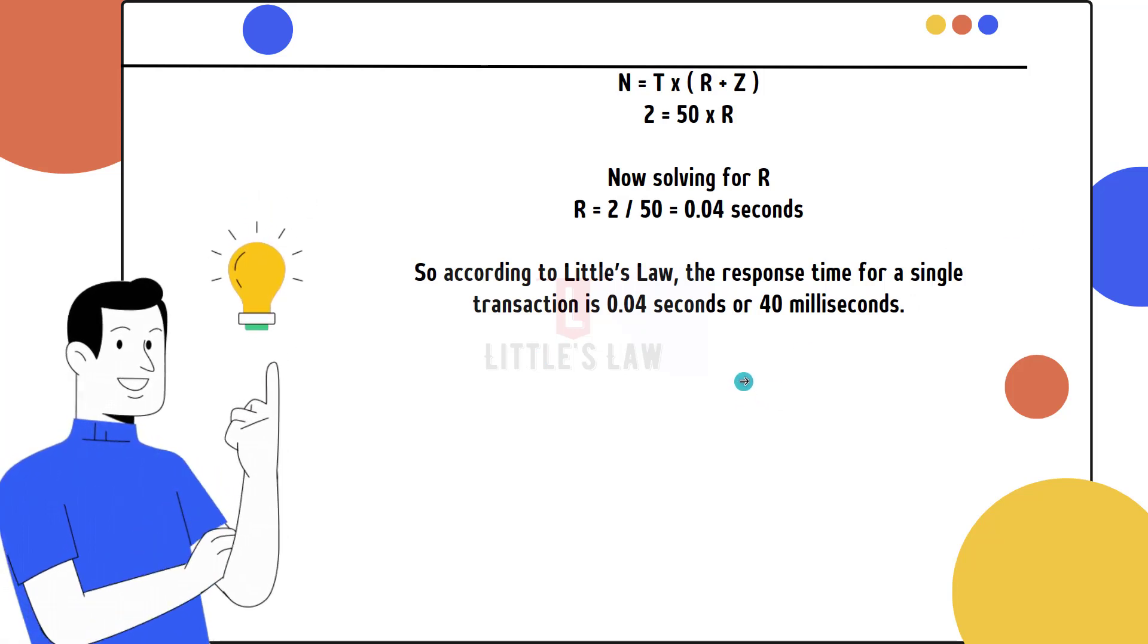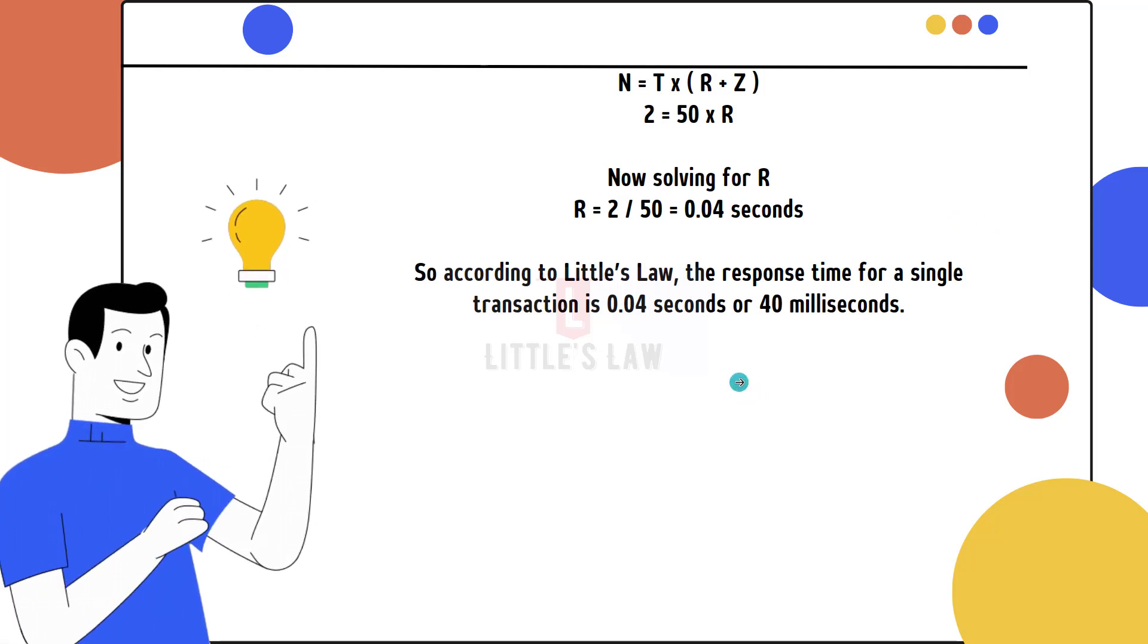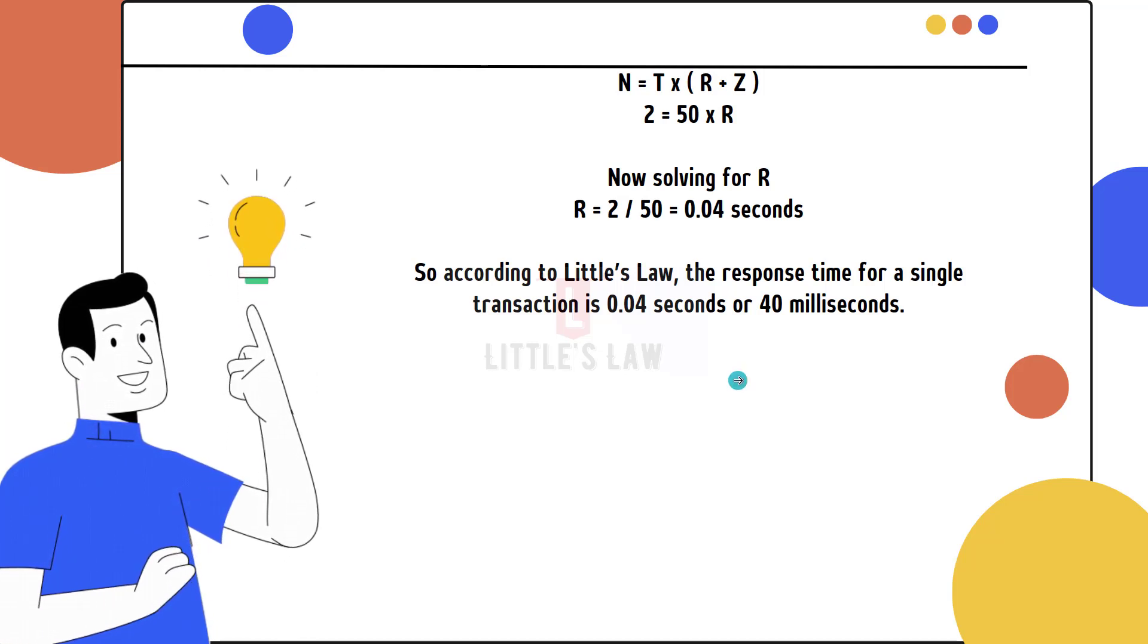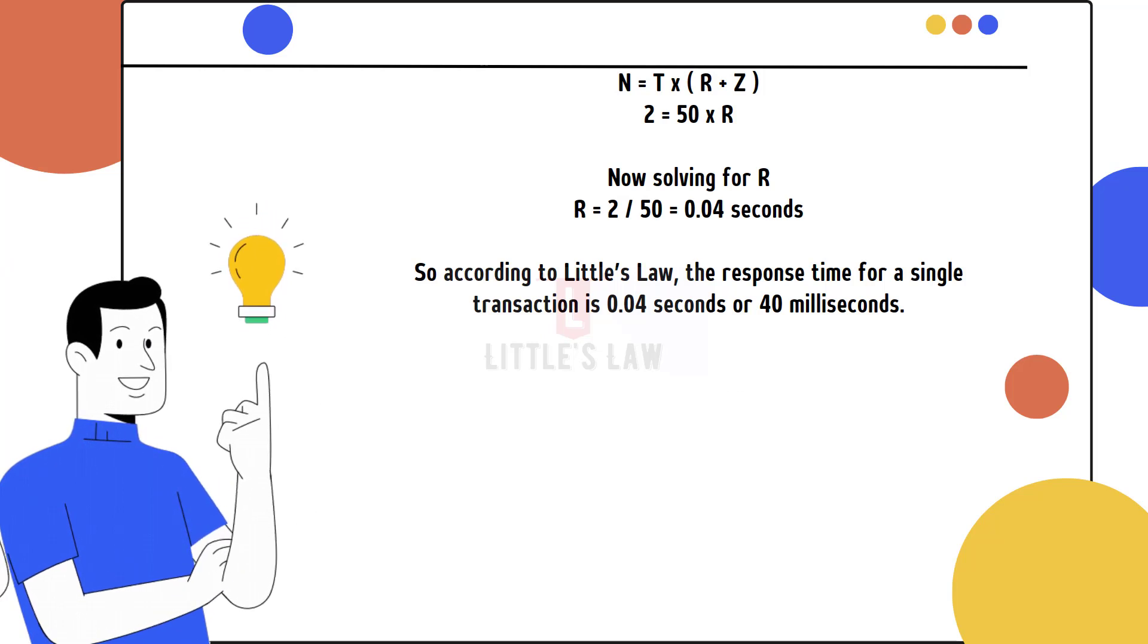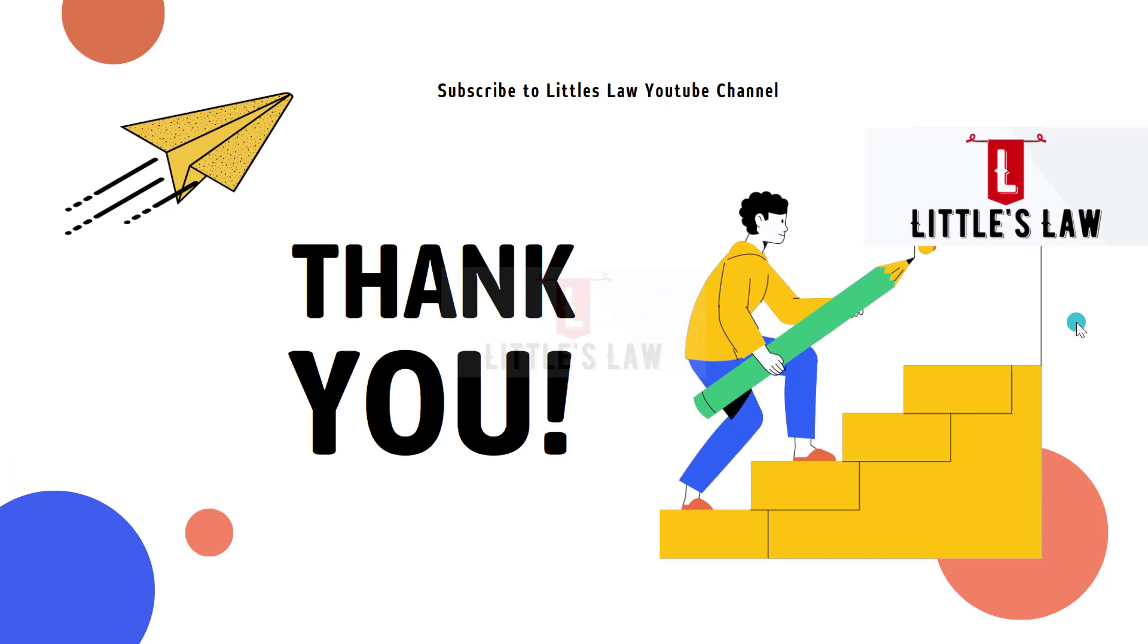According to Little's Law, the response time for a single transaction is 0.04 seconds or 40 milliseconds. There was an error in my initial response in my previous video, and I appreciate all of your patience. The correct calculation using Little's Law gives a response time of 40 milliseconds.